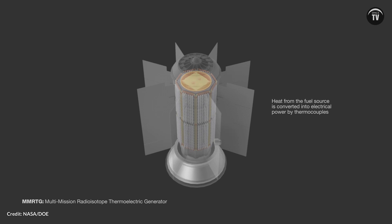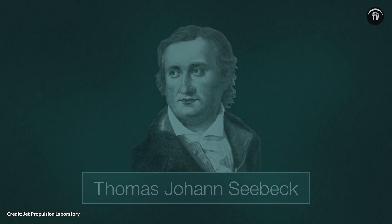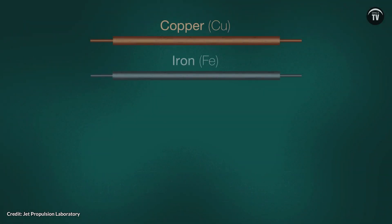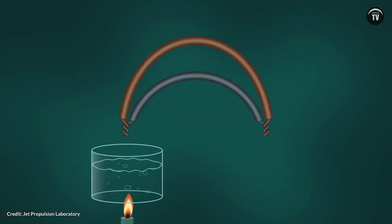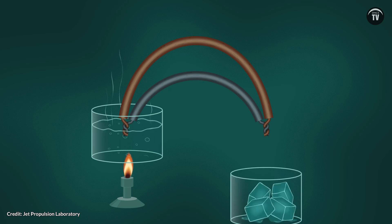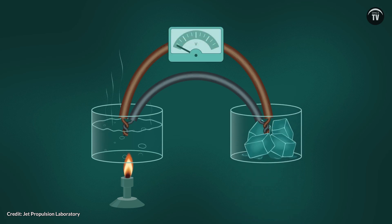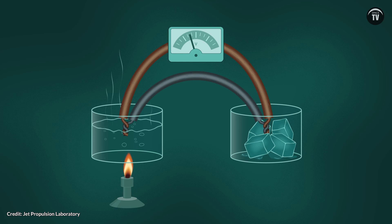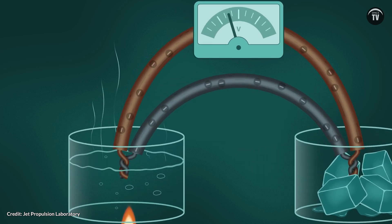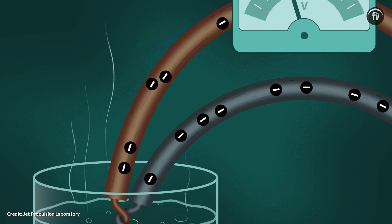Systems and batteries that use these systems generate electricity using the Seebeck effect, discovered by Thomas Seebeck over 200 years ago. In 1821, Seebeck discovered that having a temperature difference at different ends of two combined conducting materials creates a voltage, with electrons flowing from the hot side to the cold side.